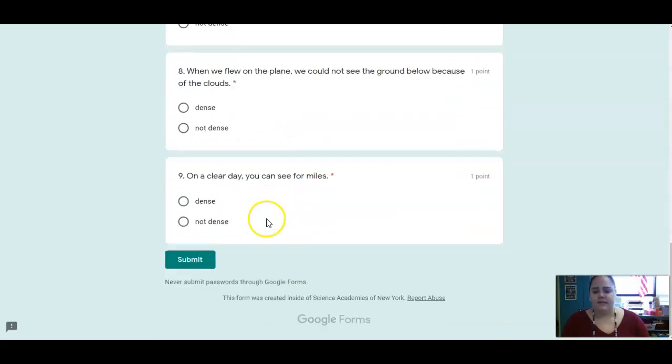And then for five, six, seven, eight, and nine, I give you a sentence, and I want you to tell me whether that is an example of something dense or whether it is not dense.